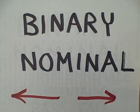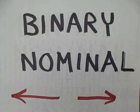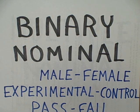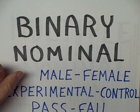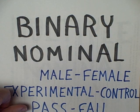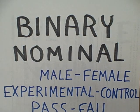Binary nominal scaling takes each case and classifies it one way or the other, and there are only two possibilities. Here are some typical binary nominal scales encountered in research: male or female, experimental group or control group, or the subject passed the test or the subject failed the test.